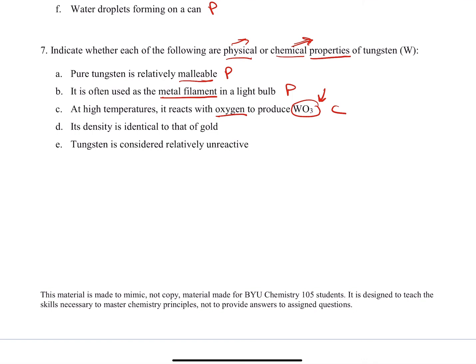Its density is identical to that of gold. Now, careful, we're not actually reacting with gold. We're just saying we're comparing two different values to it. Density is a physical property. That's specific to tungsten. Lastly, tungsten is considered relatively unreactive. Remember, reactivity is specific to chemical properties. How does it react with something else? So that's chemical.